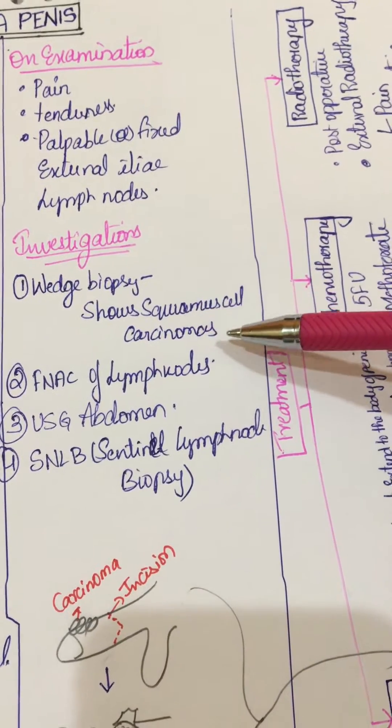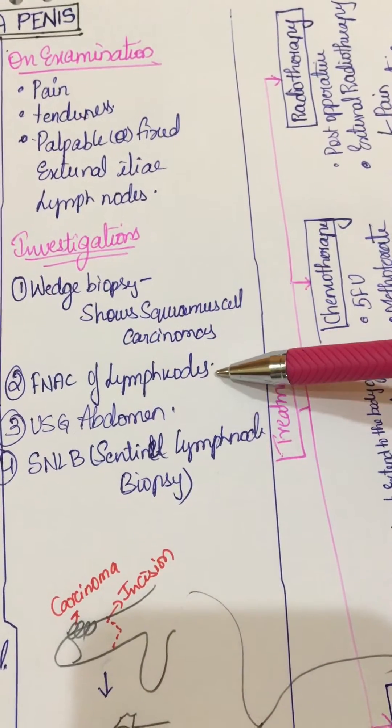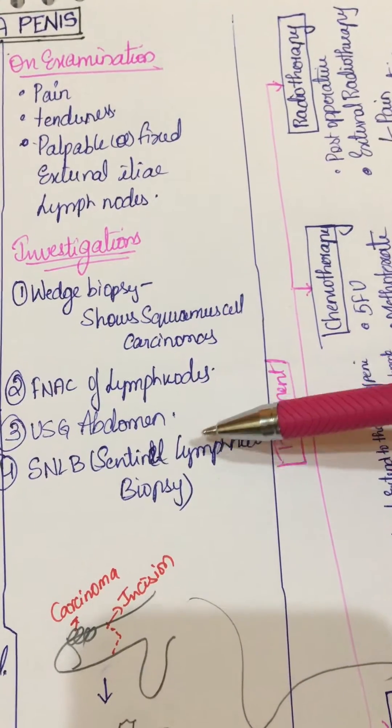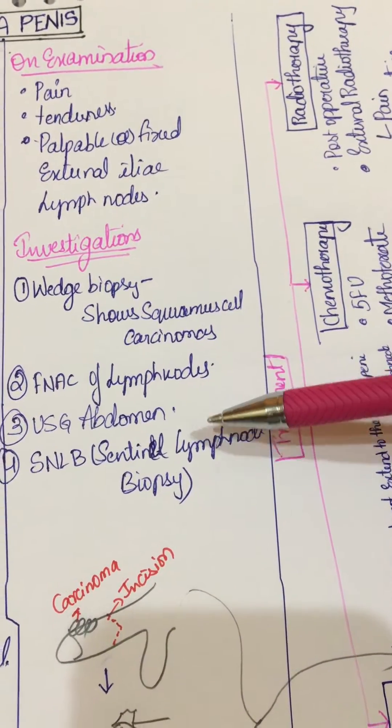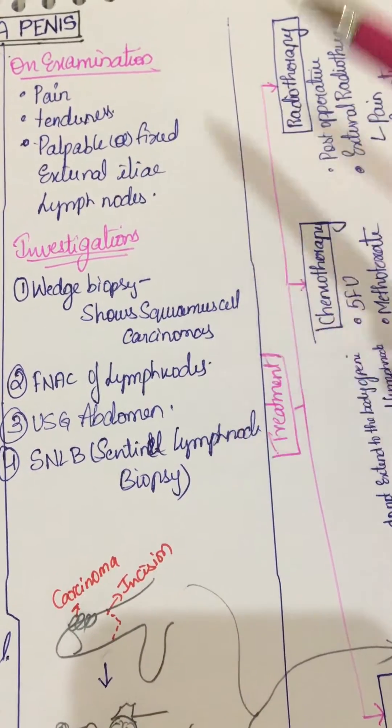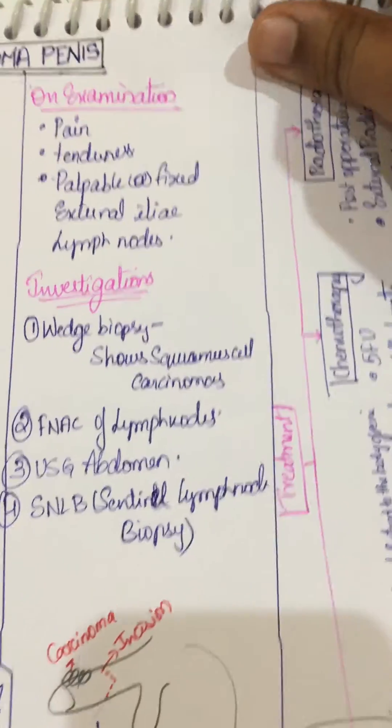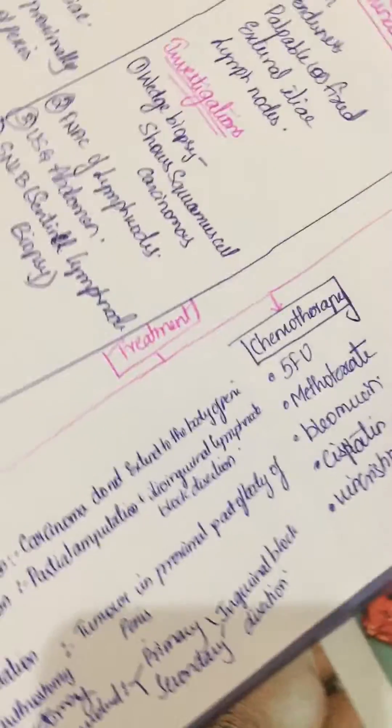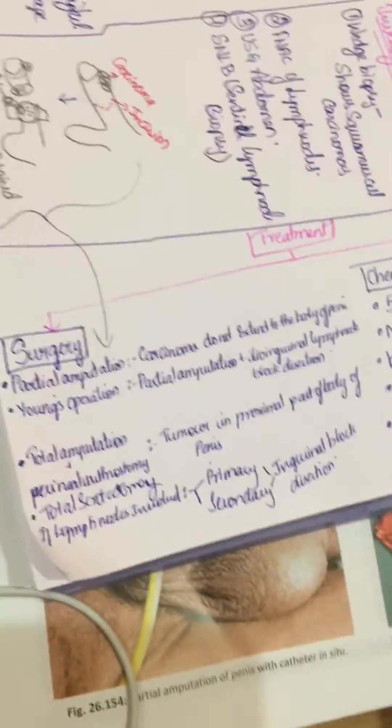On examination: pain, tenderness, palpable inguinal and external iliac lymph nodes. Investigations: wedge biopsy showing squamous cell carcinoma, FNAC of lymph node, ultrasound abdomen, and sentinel lymph node biopsy (SLNB).